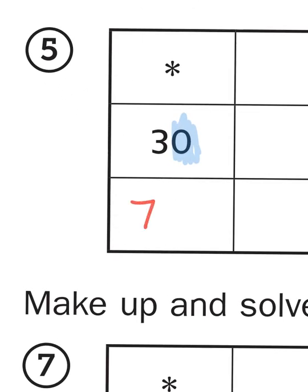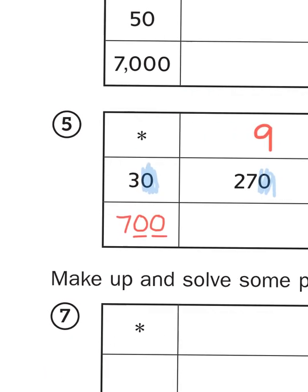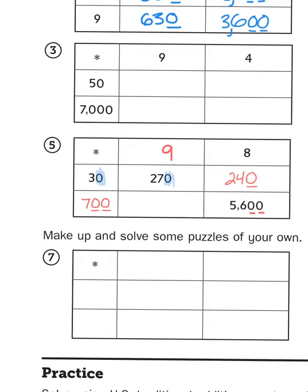And since there are no zeros behind the 8, the two zeros have to be part of this factor, which makes it 7 with two zeros, otherwise known as 700. So 8 times 700 is 5,600.